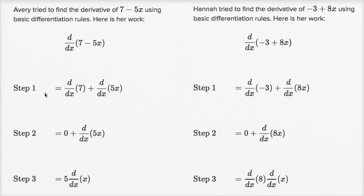They're going to take the derivative, so let's see. Step one for Avery - she's separately taking the derivative of 7 and separately taking the derivative of 5x. My spider sense is already going off here because what happened to this negative right over here?